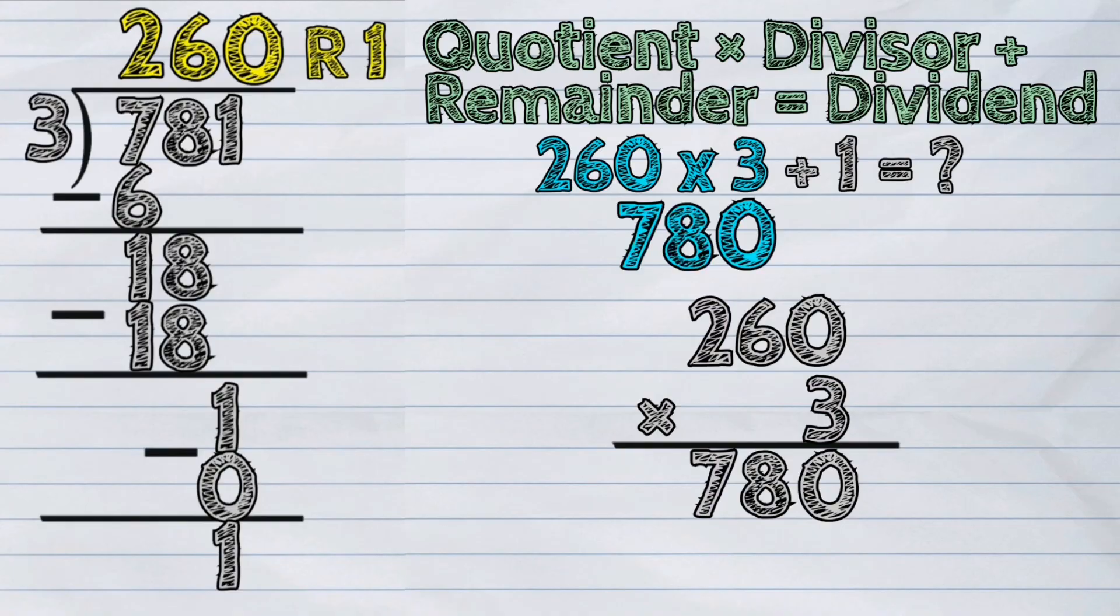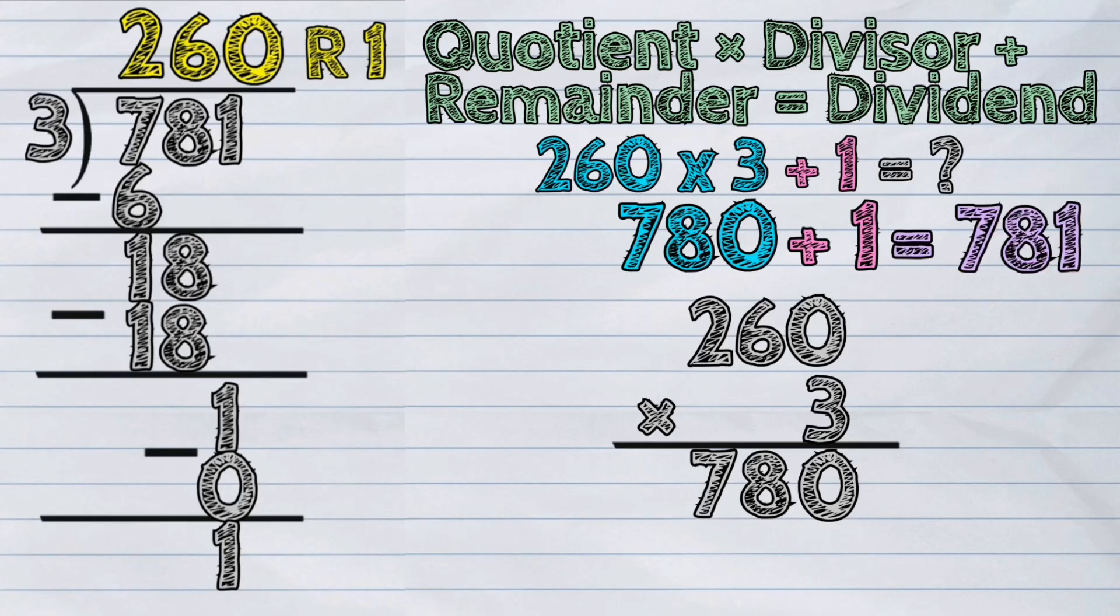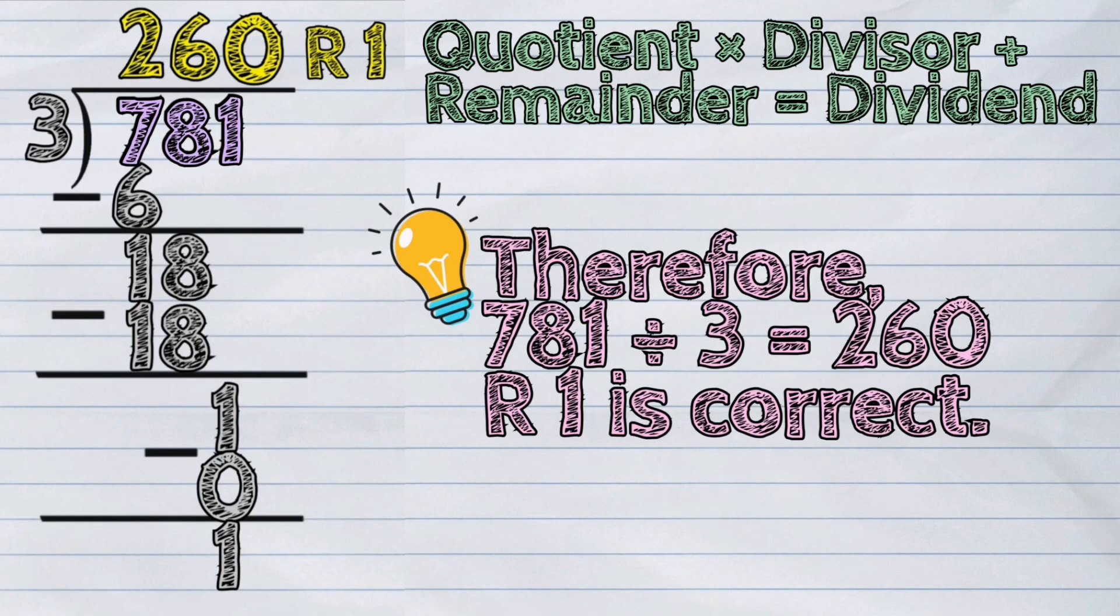Lastly, 780 plus 1 is 781. Our final answer here matches our dividend, which is 781. Therefore, 781 divided by 3 equals 260 remainder 1 is correct.